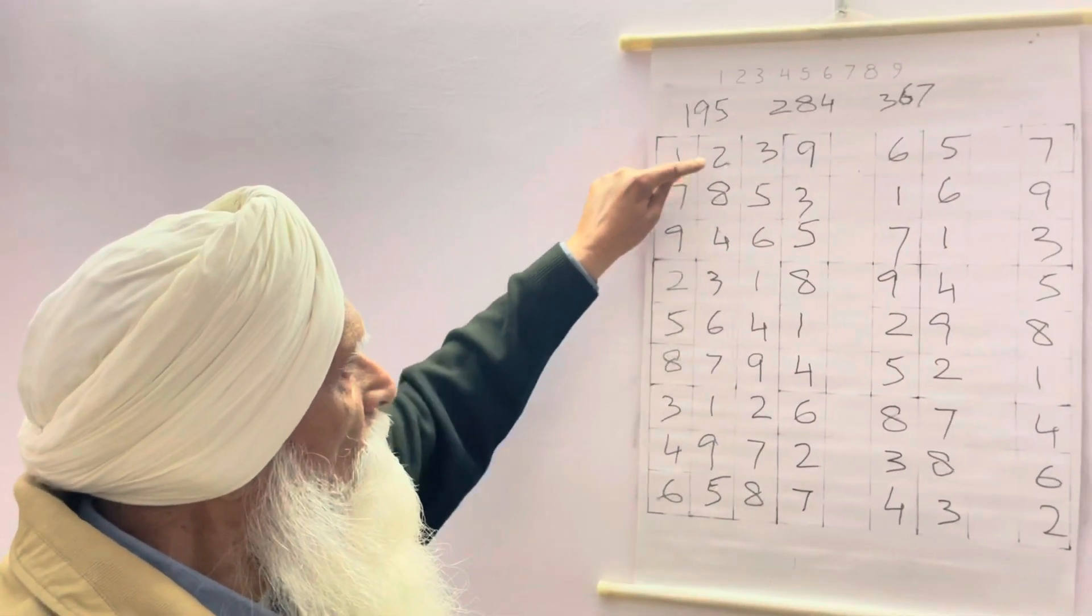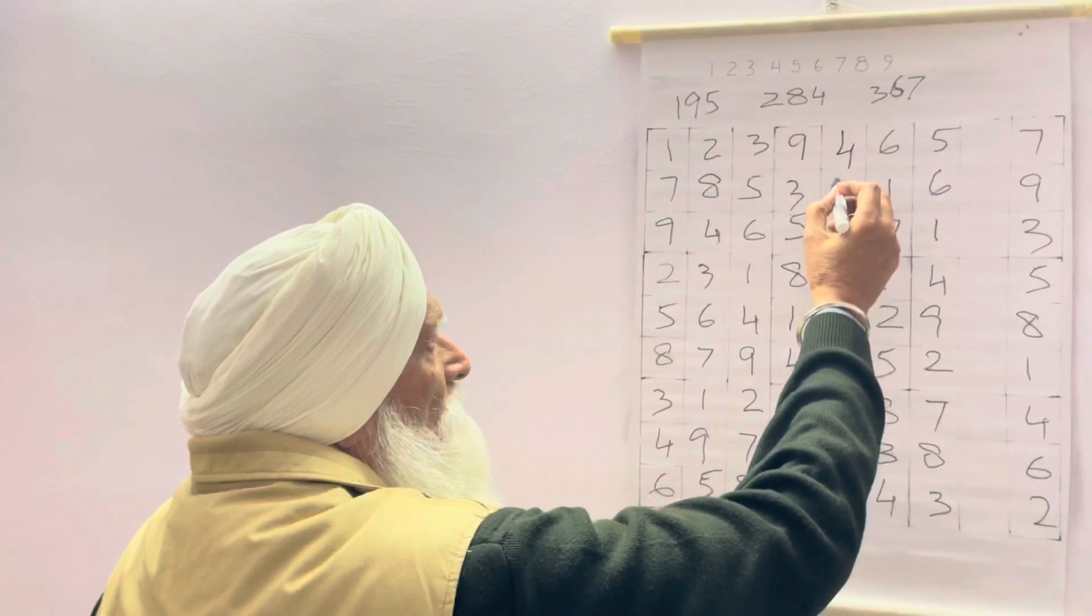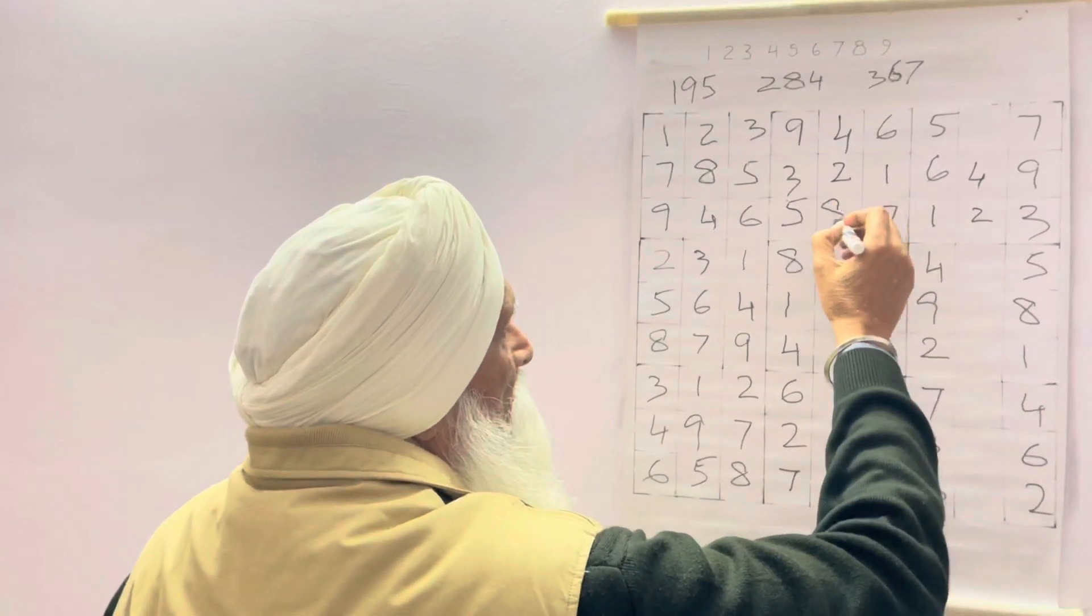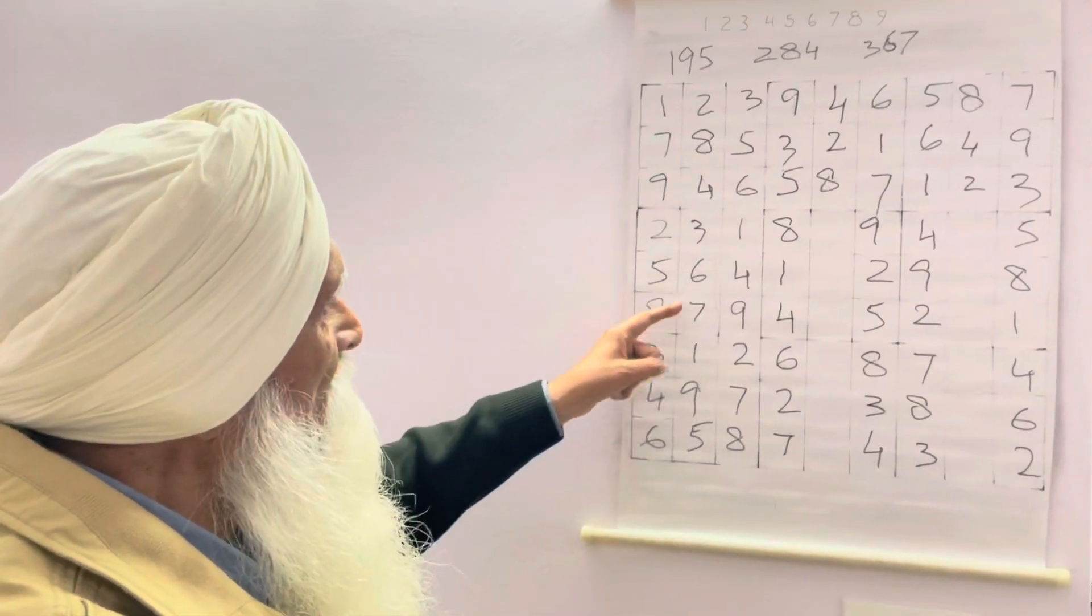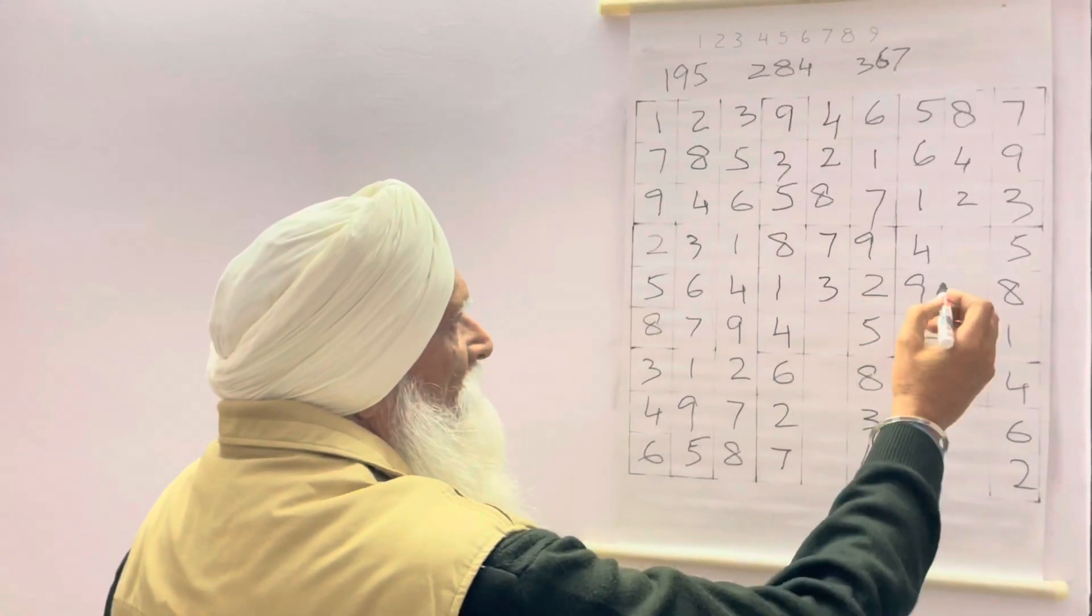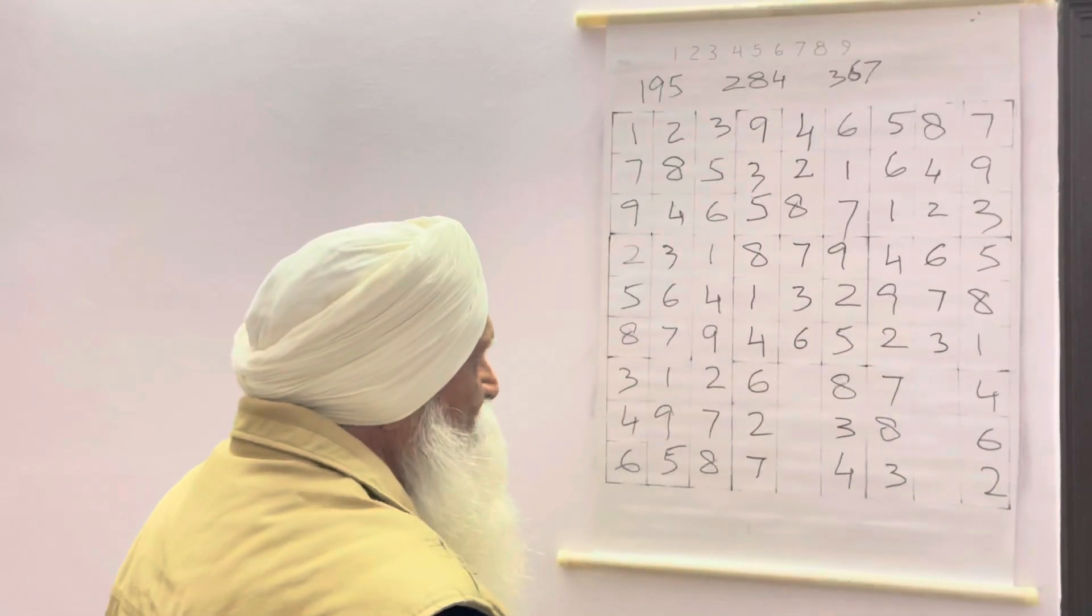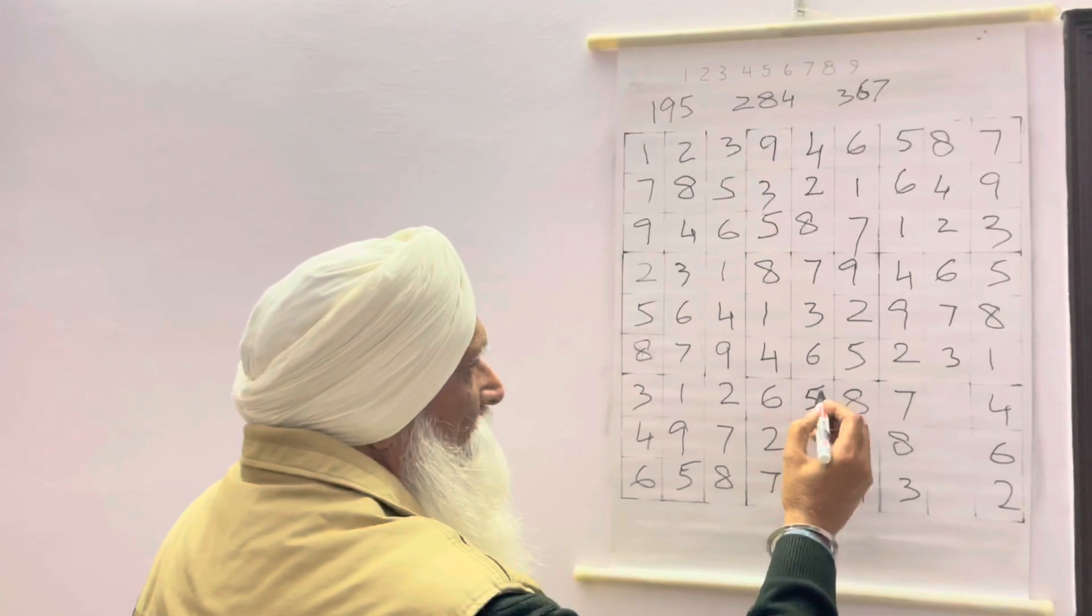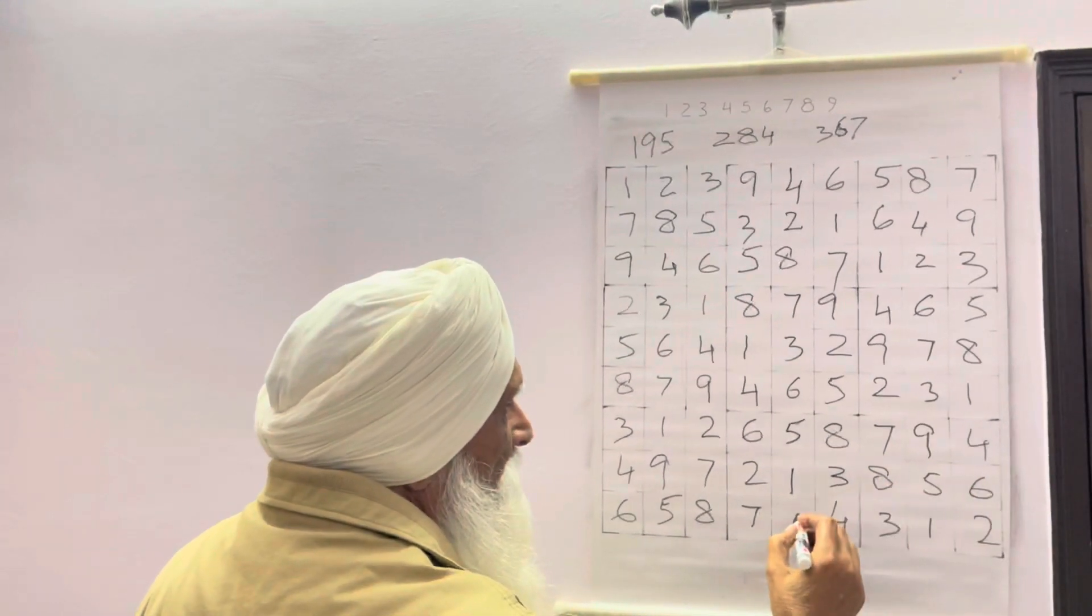So what we do: 2, 8, 4, we will reverse, make it 4, 8, 2; 4, 8, 2 again. 4, 8, 2 will go here and it will go here. In this column: 3, 6, 7, so we will make it 7, 6, 3; 7, 6, 3; 7, 6, 3. 6 will go here, 6 will go here. Similarly 1, 9, 5, we will make it 5, 9, 1; 5, 9, 1; 5, 9, 1. And 5, 9, 1. 9 will go here and 9 will go here.